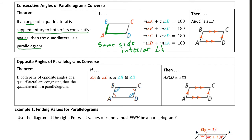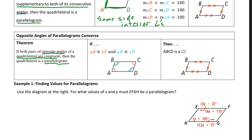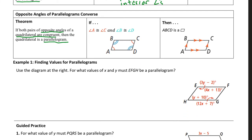The last theorem here is the opposite angles converse: if both pairs of opposite angles of a quadrilateral are congruent, then that quadrilateral is a parallelogram. So both pairs of opposite angles must be congruent for the quadrilateral to be a parallelogram.